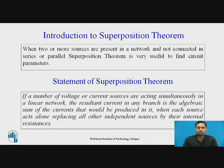Statement of Superposition Theorem: If a number of voltage or current sources are acting simultaneously in a linear network, the resultant current in any branch is the algebraic sum of the currents that would be produced in it by each source acting alone, replacing all other independent sources by their internal resistances.